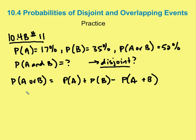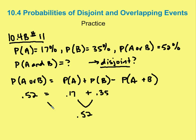P(A or B) = 0.52, P(A) = 0.17, and P(B) = 0.35. When we add P(A) + P(B), we get 0.52, which equals P(A or B). So P(A and B) must be 0, which means the events are disjoint.